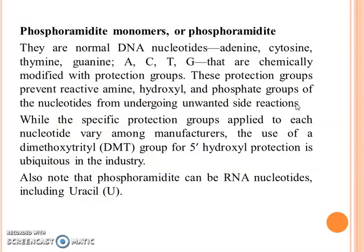Phosphoramidite monomers are normal DNA nucleotides — adenine, cytosine, thymine, guanine — that are chemically modified with protection groups. We need protection groups to prevent reactive amine, hydroxyl, and phosphate groups of the nucleotides from undergoing unwanted side reactions.